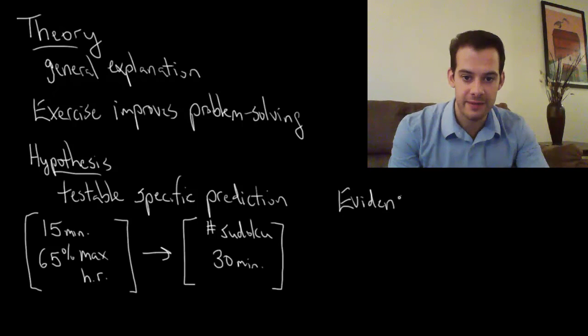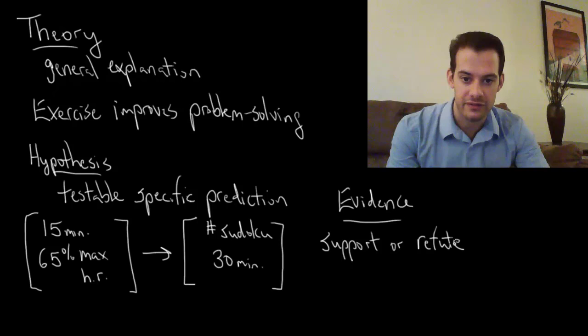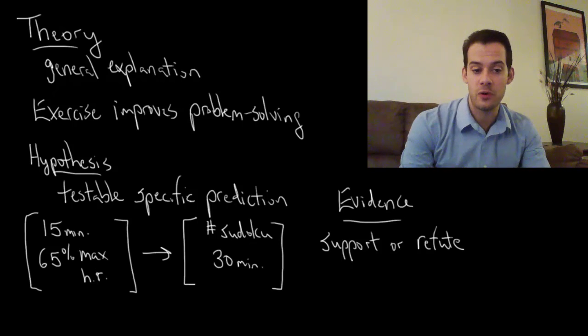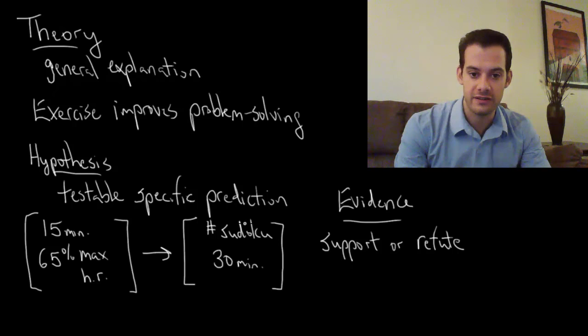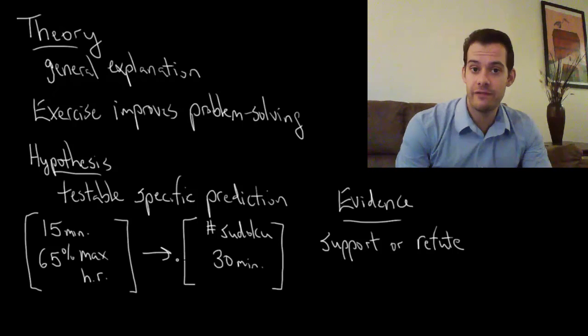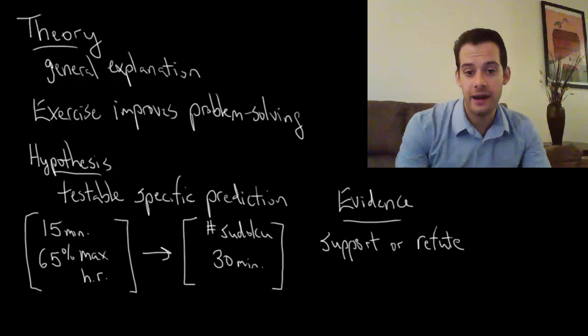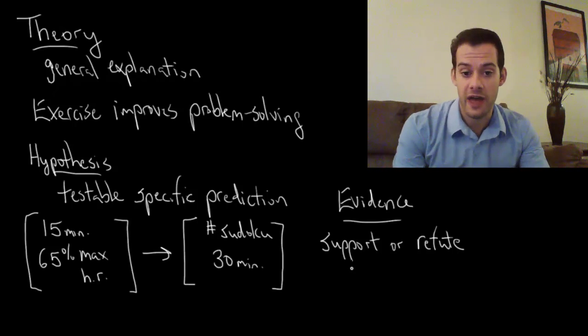So my data is going to give me some evidence. The evidence is either going to support or refute my hypothesis. So I might find that the people who do the exercise do in fact perform better on the problem solving test. Or I might find that there's no difference between the groups. Or I might even find the opposite. The people who don't exercise actually perform better. And based on this evidence I can either support my hypothesis or refute the hypothesis.